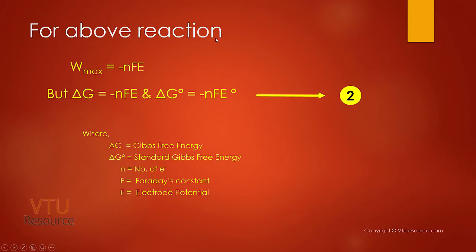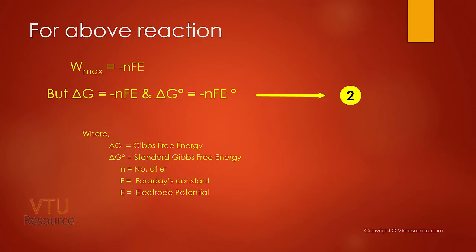For any reaction which occurs in nature, the maximum work done W_max equals minus N F E. But delta G equals minus N F E and delta G0 equals minus N F E0, where delta G is Gibbs free energy, delta G0 is standard Gibbs free energy, N is the number of electrons either gained or lost during the redox reaction, F is Faraday's constant, and E is electrode potential.